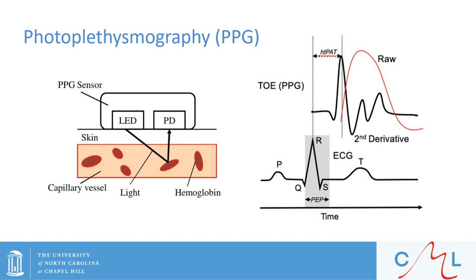Although not as common, we have also been working with photoplethysmography, or PPG. PPG contains infrared sensors which detect hemoglobin. The red line waveform depicts the raw PPG signal, and the black line — the second derivative — is used to identify the foot of the raw waveform. The bottom right shows a simultaneous ECG signal. We can then detect the speed at which the waveform travels from the heart to the PPG site.